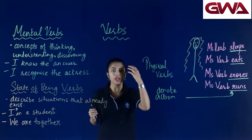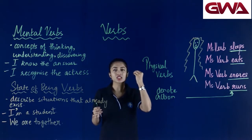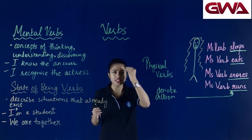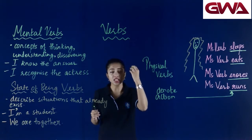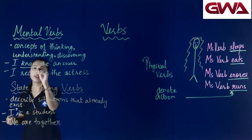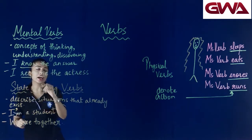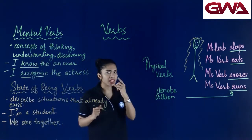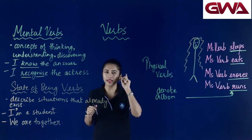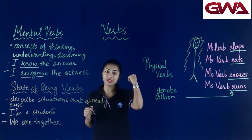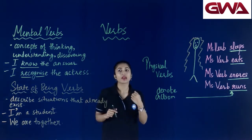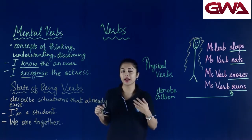क्योंकि यह mostly knowing — जानकारी किसी चीज के related — किसी चीज की understanding को denote करते हैं, and therefore knowing और दूसरे sentence में recognizing — I recognize the actress. मैंने एक actress को देखा, और मैंने realise किया कि मैं इस actress को जानती हूँ। Therefore, recognize है हमारा mental verb.